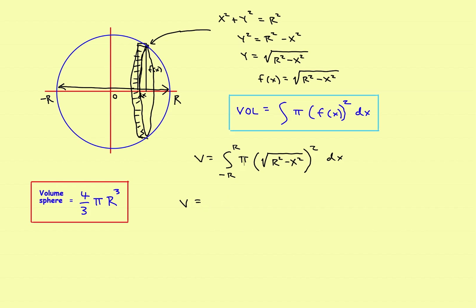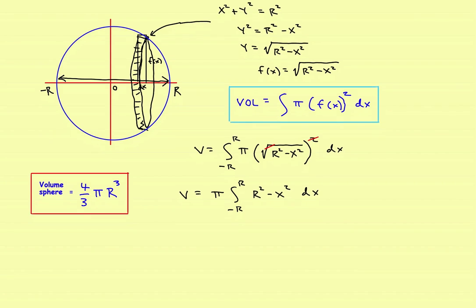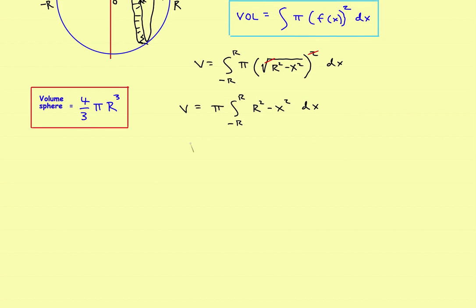First, move pi to the outside as a constant. Then square the expression: the square and the square root cancel, leaving r squared minus x squared dx. Treating r as a constant, the antiderivative of r squared is r squared times x, and the antiderivative of x squared is x cubed divided by three. So we evaluate r squared x minus x cubed over three from negative r to positive r.